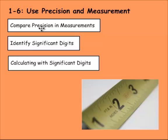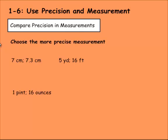So we need to compare precision in measurements, just decide what is precise, identify significant digits, and then we're going to calculate using significant digits as well.